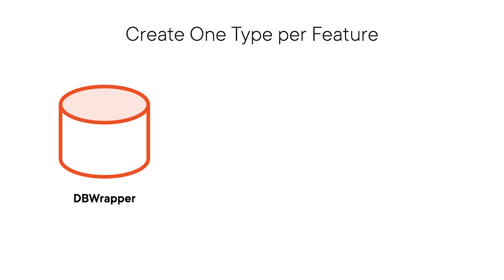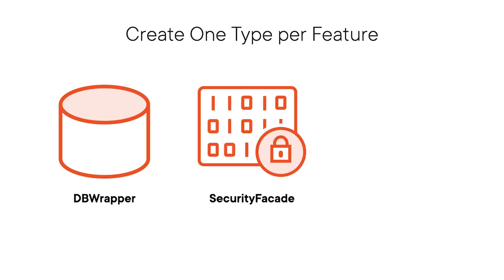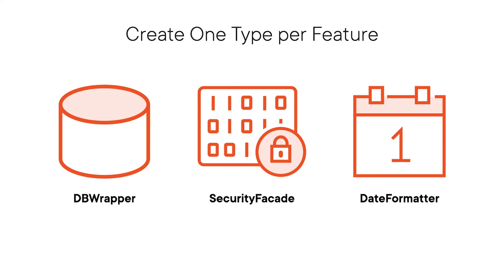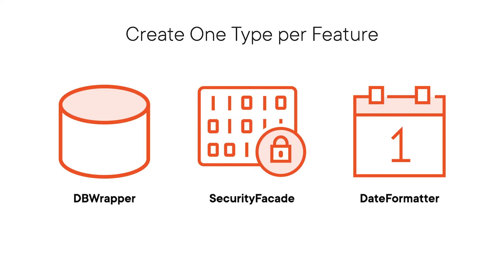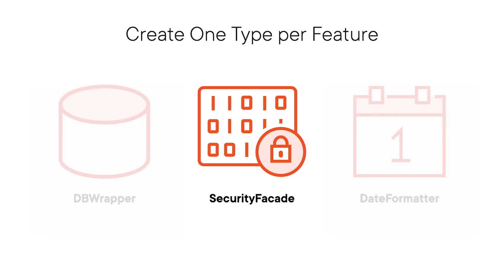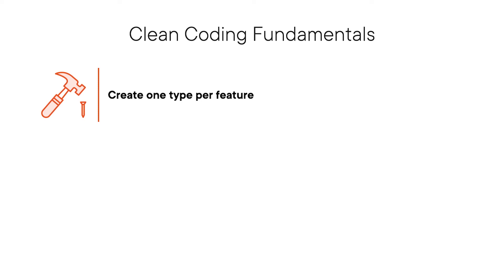A class that exposes high-level database functionality. A class responsible for the encryption and decryption of sensitive user data. And a structure that wraps the helper methods used for date formatting. Given this setup, we can isolate code changes to smaller units. Suppose we need to fix an encryption-related issue — those changes will only affect the class that deals with cryptography, leaving the other two untouched. In addition to assigning one well-defined functionality to a type, we should also limit the dependencies between our types to the necessary minimum. Decoupling our types will reduce ripple effects in the codebase when changes occur.